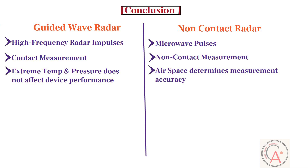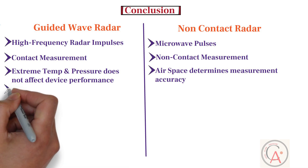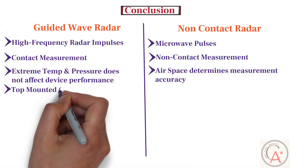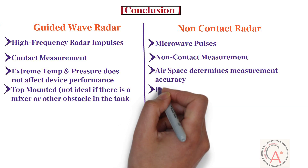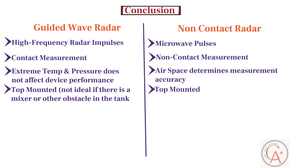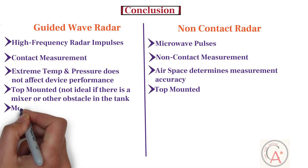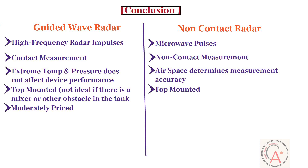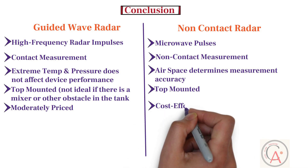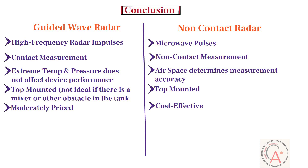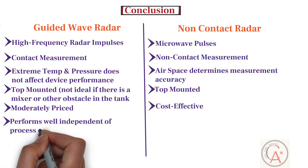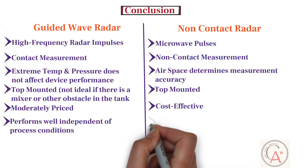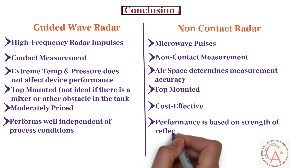Fourthly, guided wave radar is mounted on the top of the tank and is not ideal if there is a mixer or other obstacles inside — and pulse radar shares the same limitation. On the price perspective, guided wave radar is moderately priced, whereas pulse radar is very cost-effective. Finally, in terms of performance, guided wave radar is exceptional and performs well independent of process conditions, while pulse radar technology's performance depends on the strength of reflections and surface conditions.